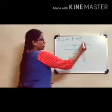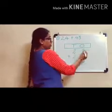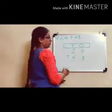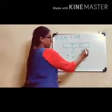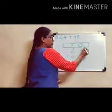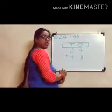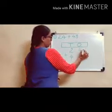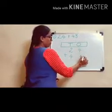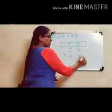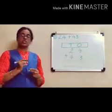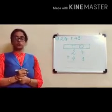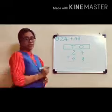First we will add the columns of 1s — that means we will add the numbers in the ones column. 4 plus 3 is equal to 7.